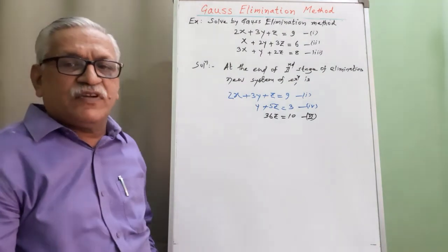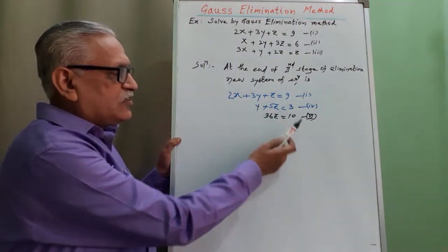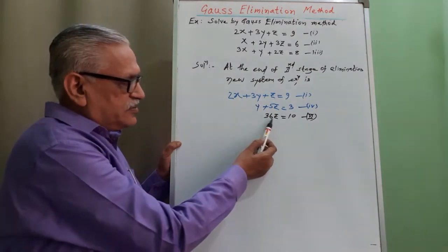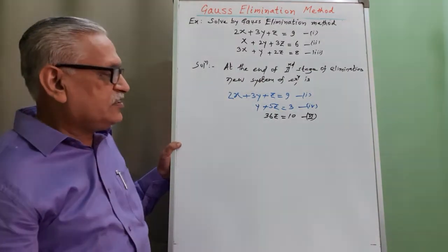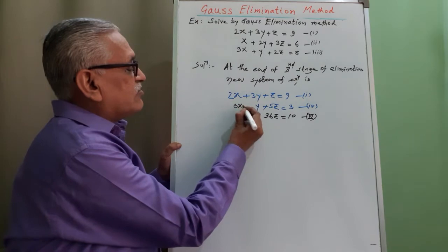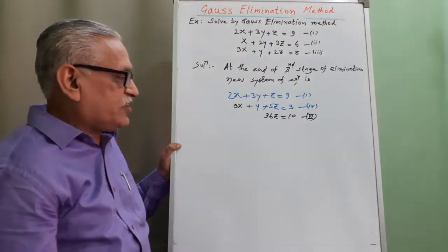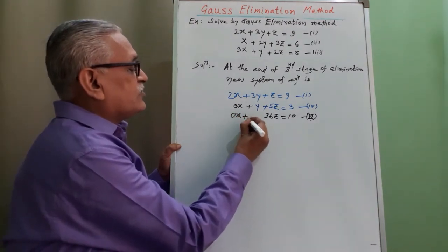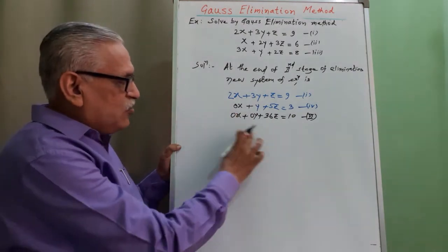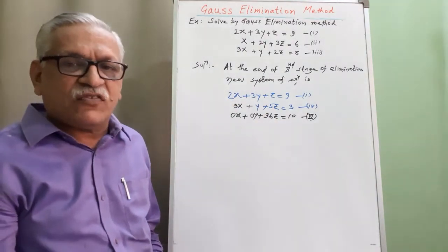At the end of the second stage of elimination, the new system of equations is: first equation unchanged, equation 4 unchanged, and equation 6 is 36z equals 10. Observing here, the lower diagonal elements are all 0, so this new system is called the upper triangular system of equations.